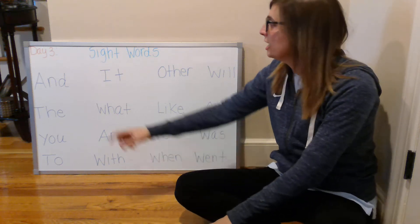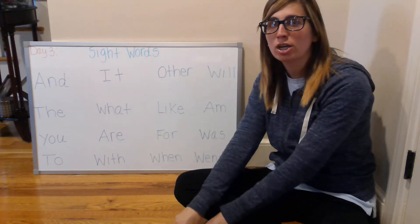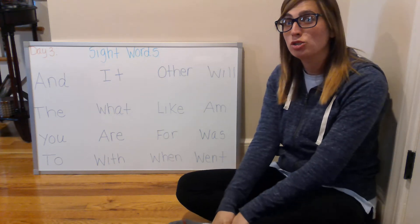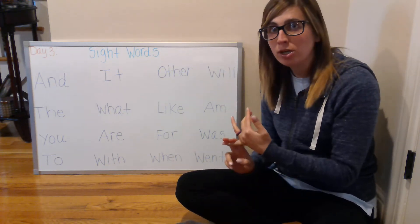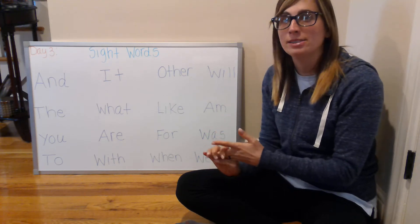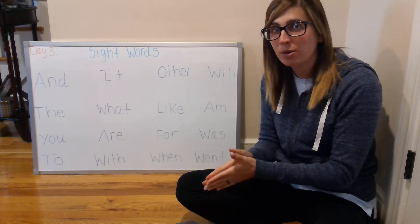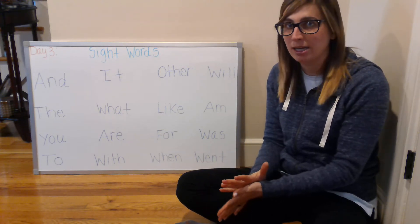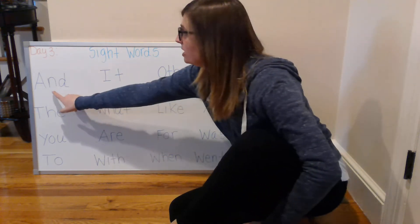Hi everyone. Today is going to be day three and we're going to go over some of our sight words that we have learned in school. What I'm going to do is say each sight word, spell it, and then say it again. I'd like you to repeat the sight word, spell it out with me, and then repeat it again. So our first one is 'and'.